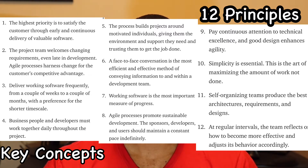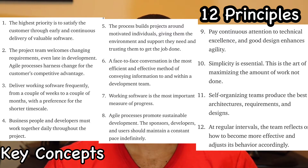Five: the process builds projects around motivated individuals, giving them the environment and support they need, and trusting them to get the job done. Six: face-to-face conversation is the most efficient and effective method of conveying information to and within a development team. Seven: working software is the most important measure of progress. Eight: Agile processes promote sustainable development — the sponsors, developers, and users should maintain a constant pace indefinitely.